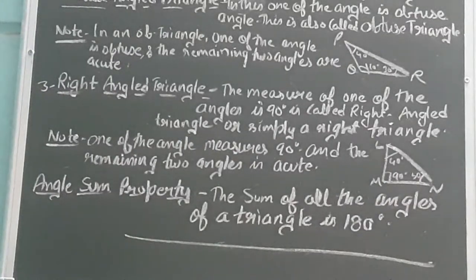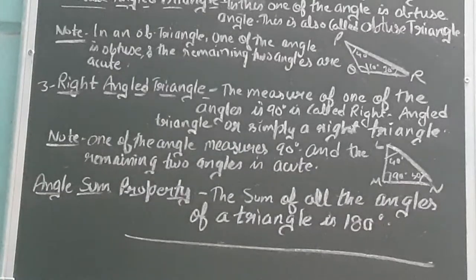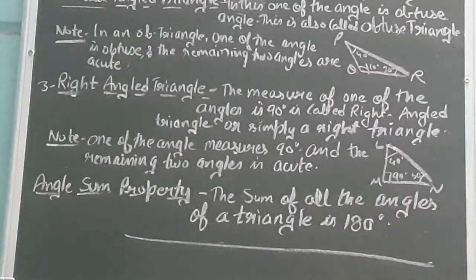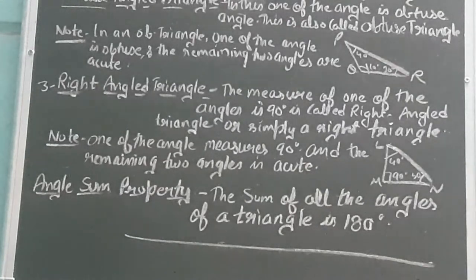Note: one angle measures 90 degrees and the remaining two angles are acute, meaning less than 90 degrees. This is the main difference between acute angle triangle, obtuse angle triangle, and right angle triangle. After that comes the angle sum property — the sum of all the angles in a triangle is 180 degrees. Whenever we add all three angles of a triangle, the answer is always 180 degrees.